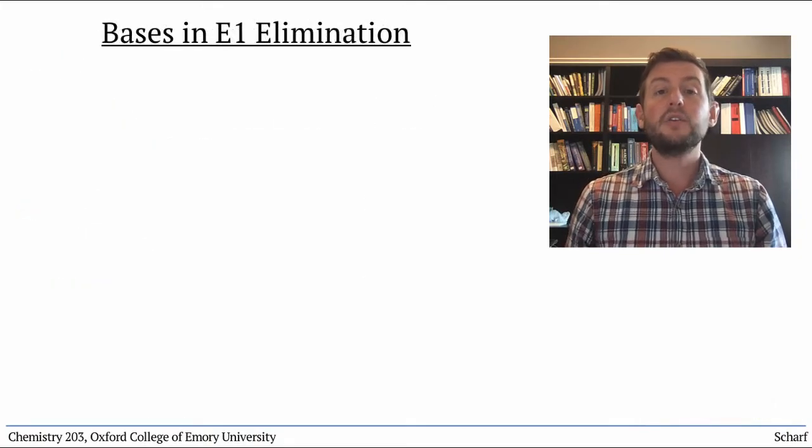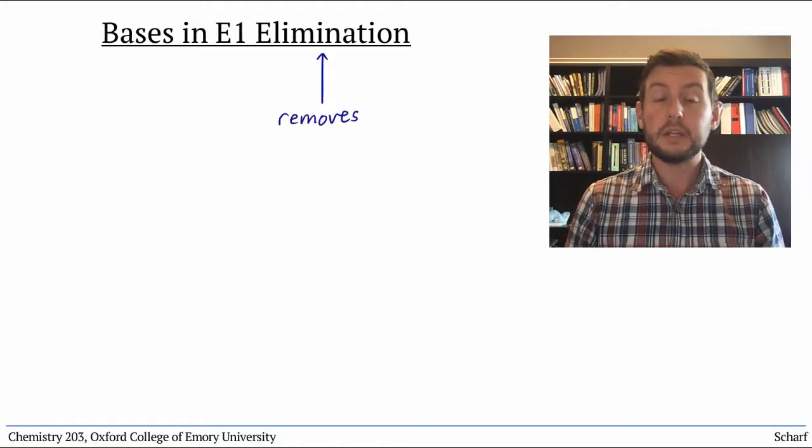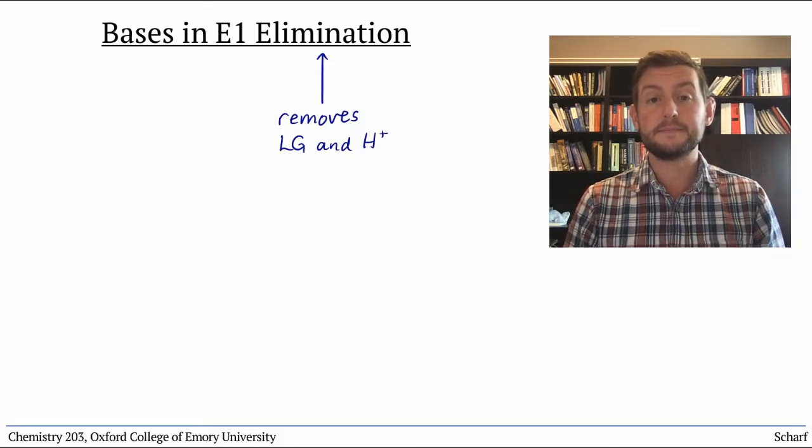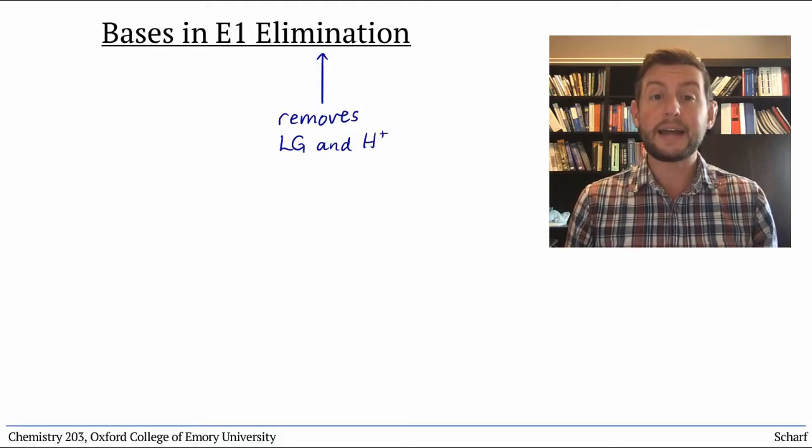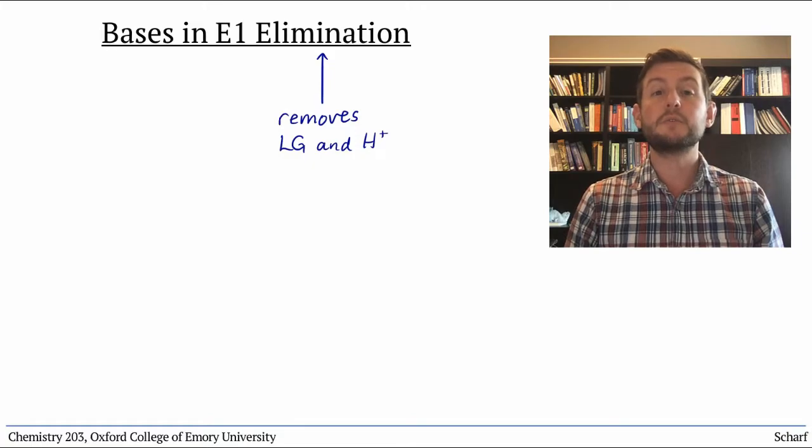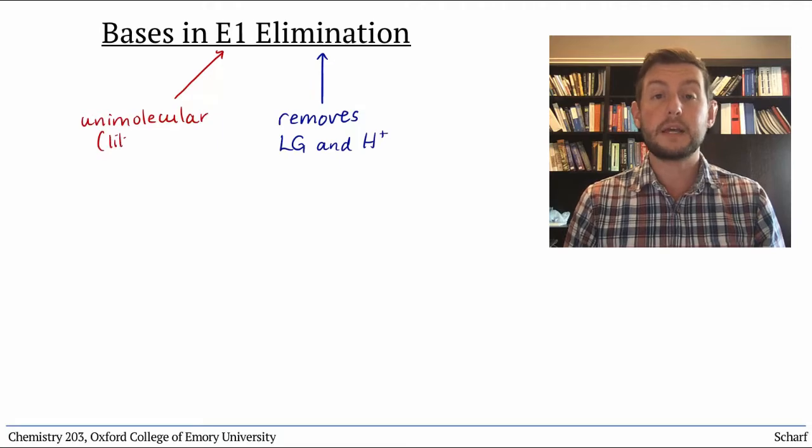This reaction, called an elimination because you remove two groups from a molecule—the leaving group and a proton—is our first way to synthesize alkenes. Because it happens to the same intermediate, a carbocation that's present in the SN1 reaction, this reaction is referred to as the E1 reaction for elimination unimolecular.